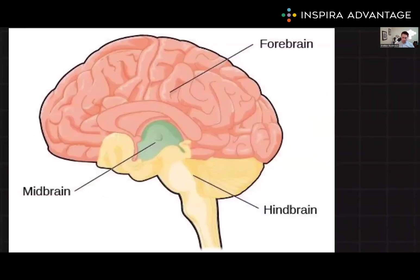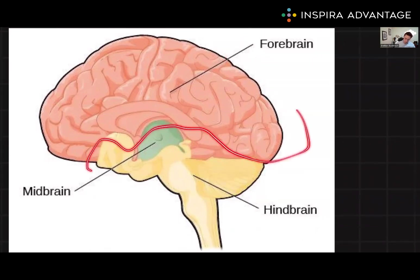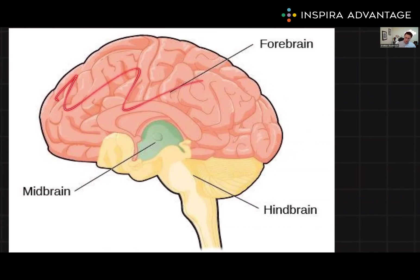Moving up from the hindbrain, we have the midbrain, which is located in the center of the brainstem. The midbrain contains several important structures, including the tectum and tegmentum. These structures play a critical role in sensory processing, movement, and arousal. And finally, we have the forebrain, shown here in orange, which is the largest and most complex part of the brain. The forebrain is divided into two main parts: the cerebral cortex, which is on the outside, and the subcortical structures, which are inset. The cerebral cortex is the outer layer of the brain responsible for many of our higher order functions, such as perception, cognition, and language.